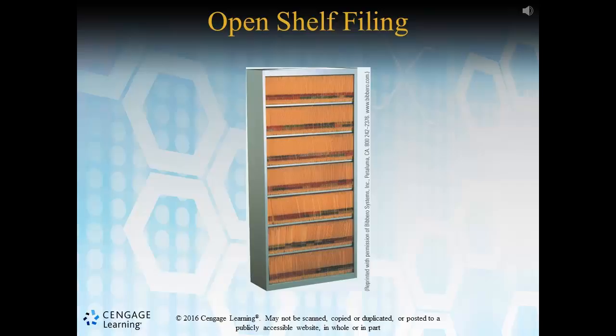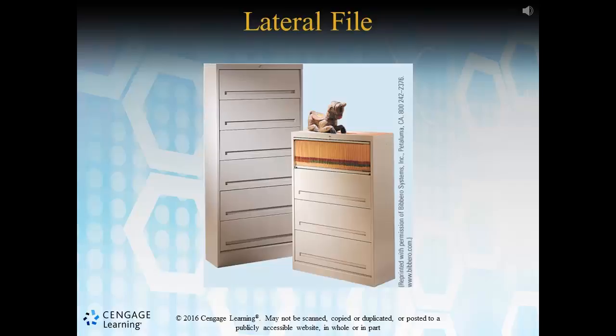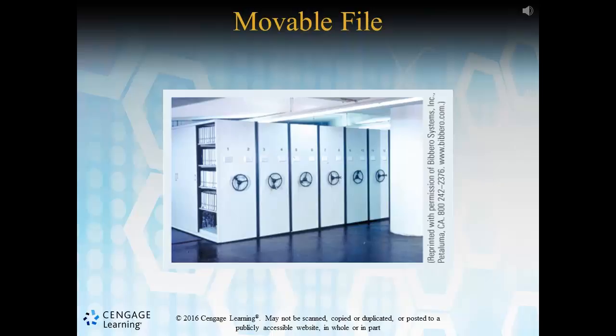A lateral file is a two-to-eight-shelf unit that also has doors that are retractable. Next up is the movable file, and as you'd imagine with a name like this, via manual or power options, a set of tracks allow these cabinets to be moved per need.